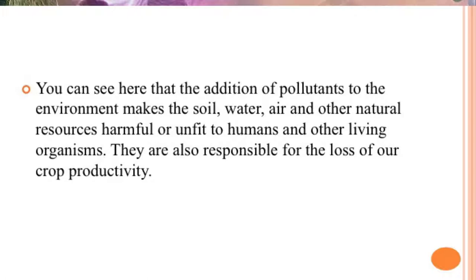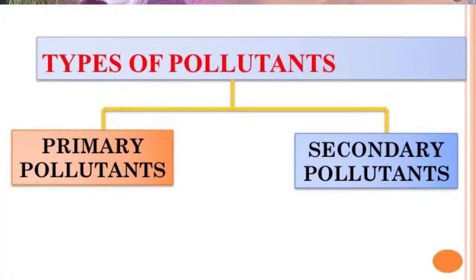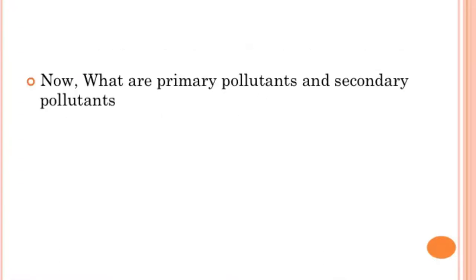You can see here that the addition of pollutants to the environment makes the soil, water, air and other natural resources harmful or unfit for humans and other living organisms. These are also responsible for the loss of crop productivity. There are different types of environmental pollutants — some are persistent pollutants and some are non-persistent pollutants. Pollutants can also be classified as primary and secondary pollutants, biodegradable and non-biodegradable pollutants.